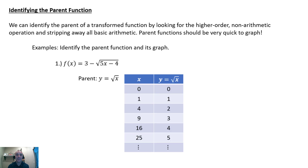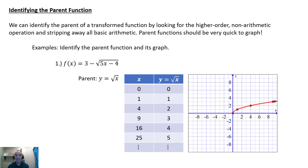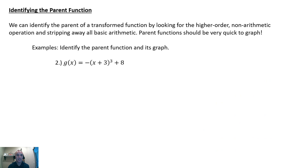To graph that, it's really simple — we can plot some points. Plug in X values of 0 or bigger that are easy to take the square root of, and calculate the Y values, which are their square roots. If you graph that, you get a sideways half parabola function.